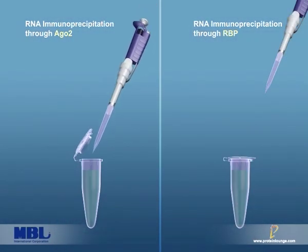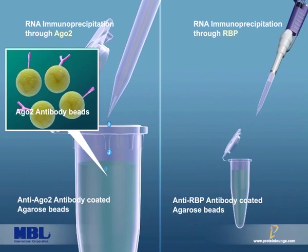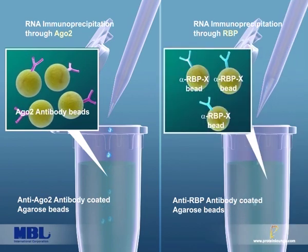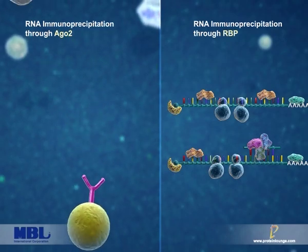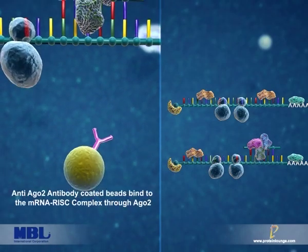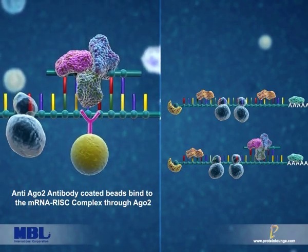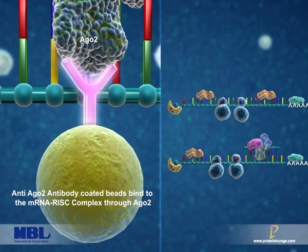In the case of AGO2 immunoprecipitation, the cytoplasmic fraction is incubated with anti-AGO2 beads. Anti-AGO2 beads are used to isolate intact mRNA-microRNA complexes from the cytoplasmic fraction. With the help of agarose beads, the Argonaute complexes are highly enriched by precipitation.